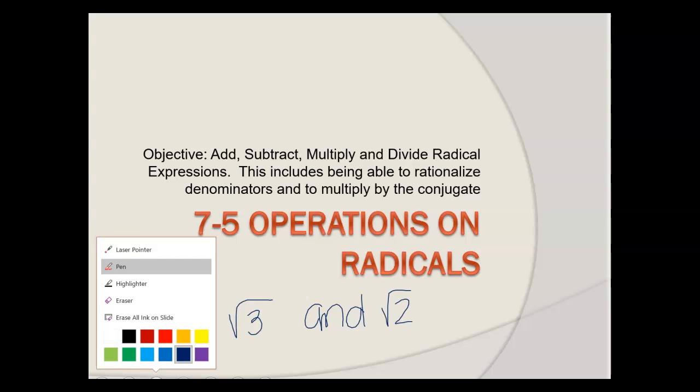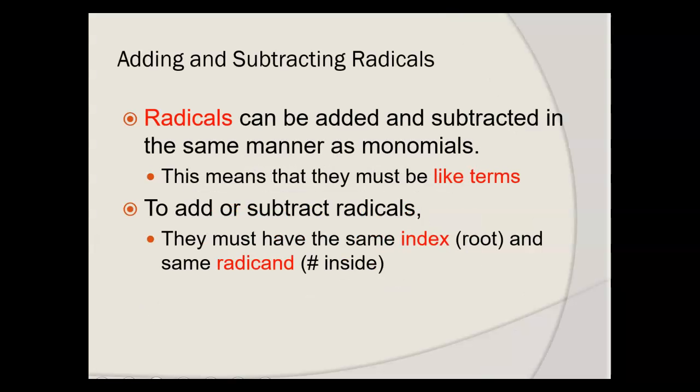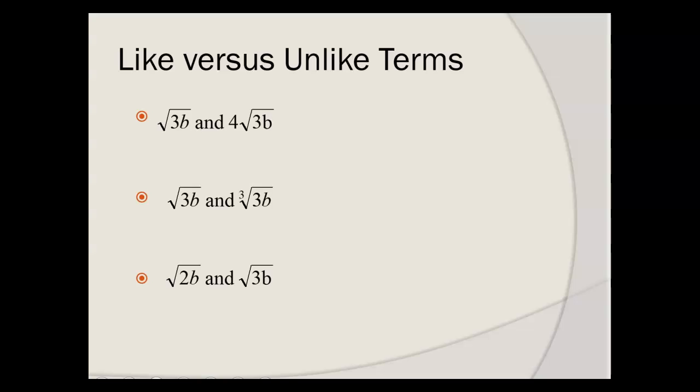You have to take that into account as we work through our problems. Radicals can be added and subtracted in the same manner as monomials. The only way we can add and subtract them together is if they are like terms. To add or subtract radicals, they must have the same index. Remember the index is the nth root term, like cube roots can add to cube roots, but cube roots can't add to square roots. And they must have the same radicand, a.k.a. the number inside.